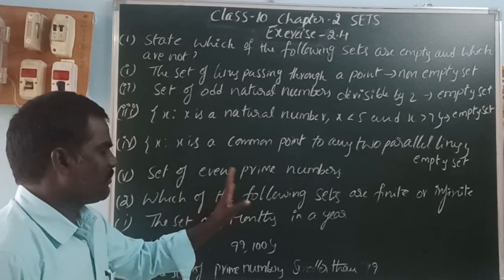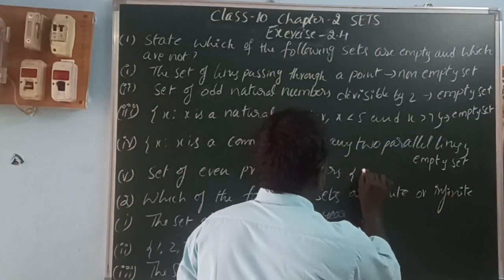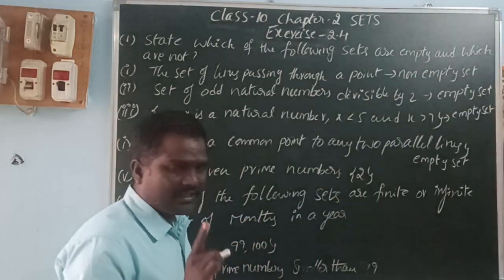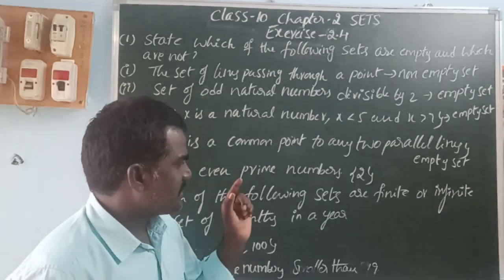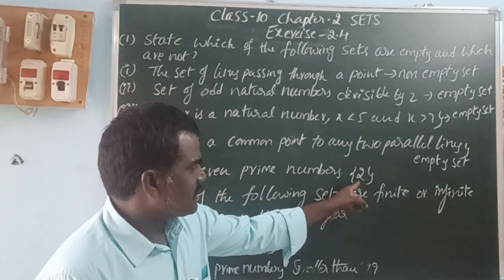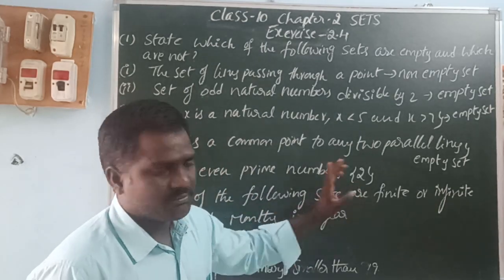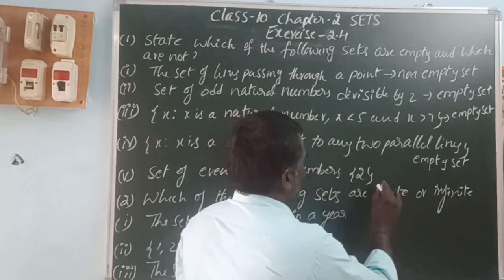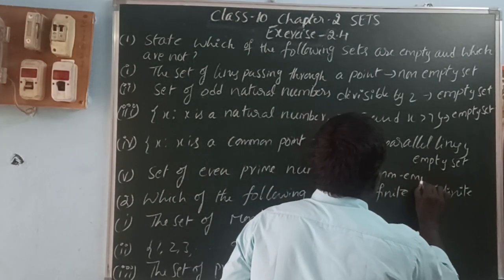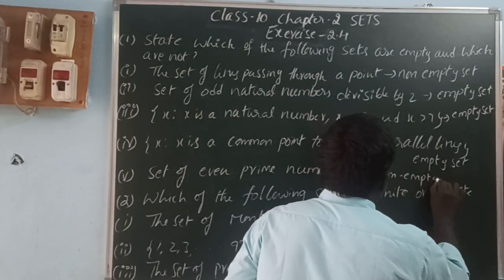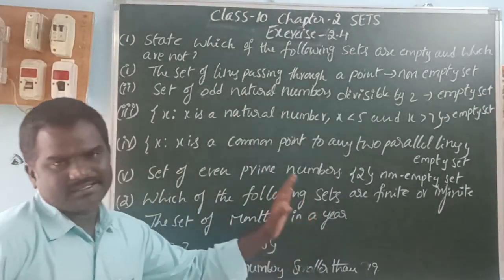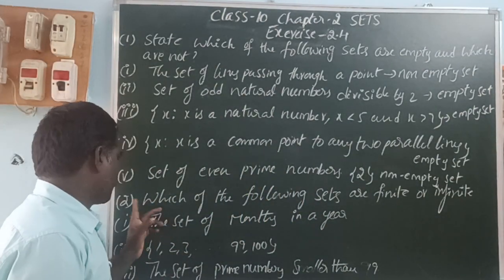Next: the set of even prime numbers. There is only one element — the number 2, which is both an even number and a prime number. So that element is called an even prime number, and it is a non-empty set. A set which has only one element is called a singleton set.